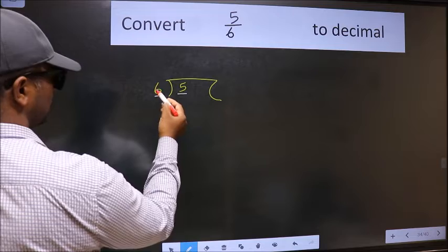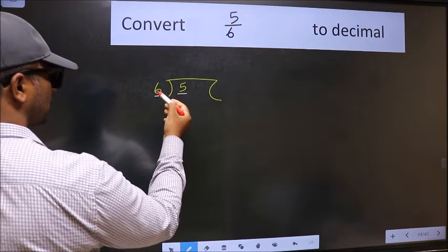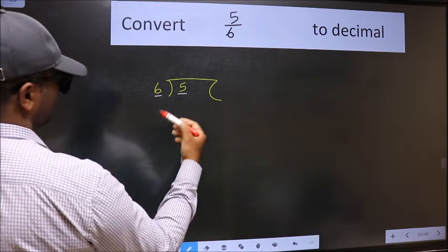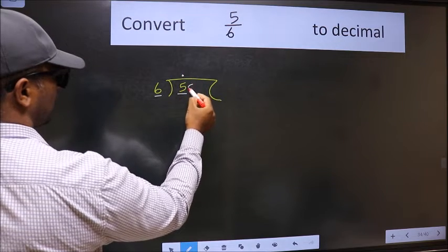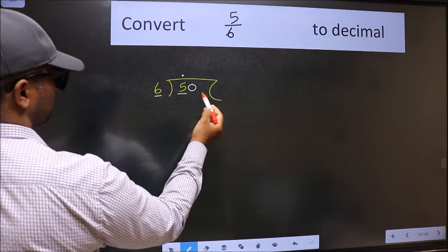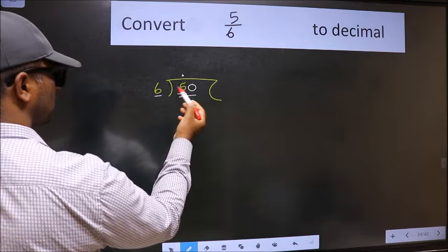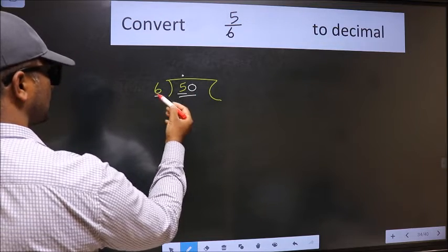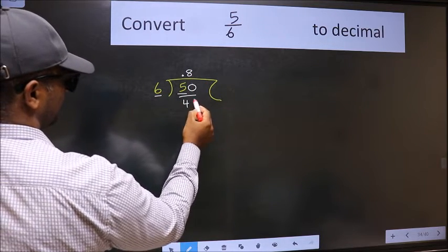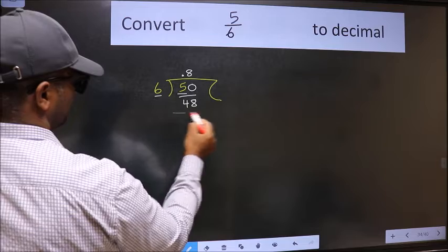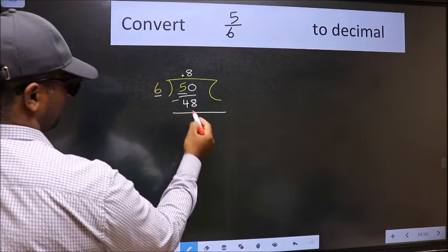Here we have 5 and here 6. Since 5 is smaller than 6, we put a dot and take 0, making it 50. A number close to 50 in the 6 times table is 6×8=48. Now we subtract and get 2.